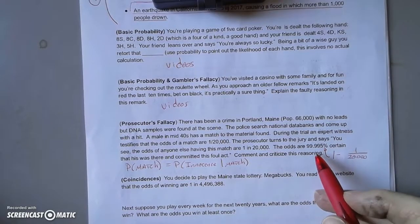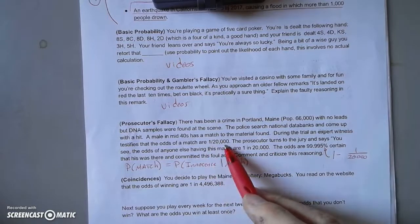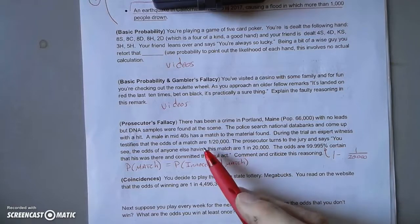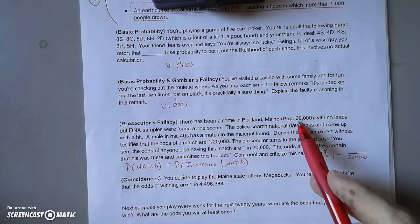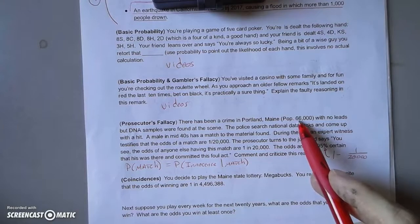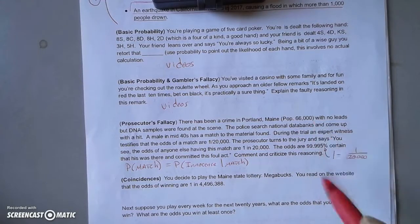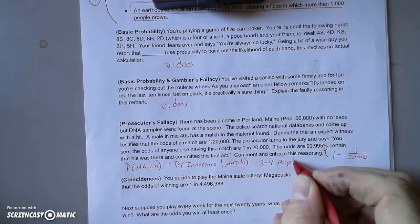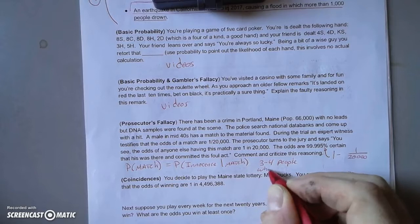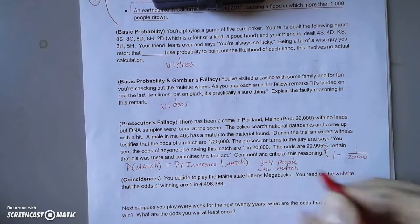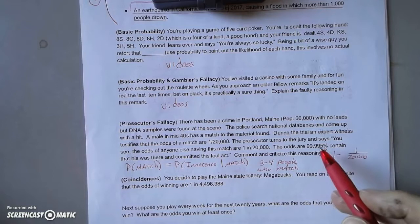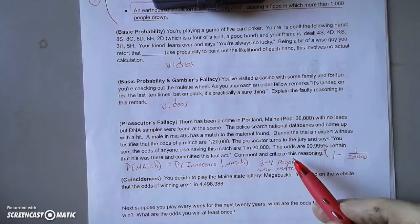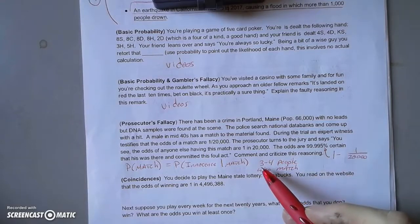One way to see this is to go back to this frequency. If one out of 20,000 individuals has this genetic material, then in a place like Portland, there'll be three or more—3.3, but three to four people who match. If you have no other evidence on this individual except for the DNA, in this case, the odds that you picked up the correct person is one in three or one in four.